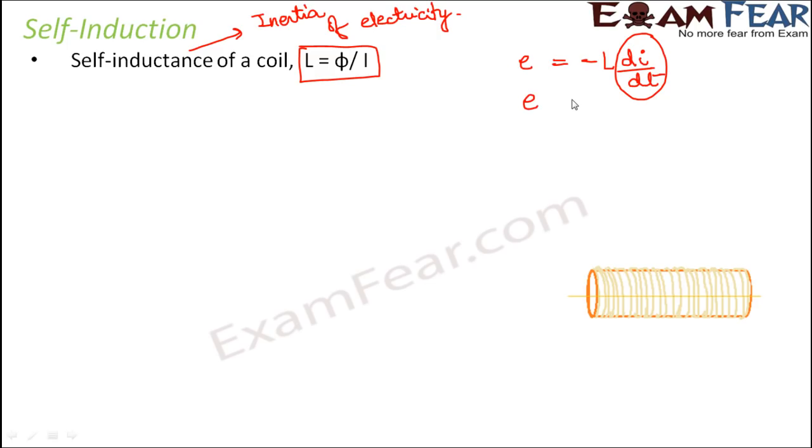So from this we understand that EMF is directly proportional to di by dt, that is rate of change of current, but you have a negative sign. Why do you have this negative sign? Because this EMF opposes the current which is flowing through the coil at any point in time.